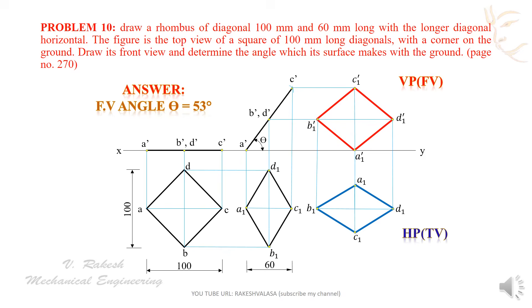In this question, draw its front view and determine the angle which its surface makes with the ground. This is your question. Write the angle. The angle of final front view, that is theta equals 53 degrees. That theta is shown in this figure.